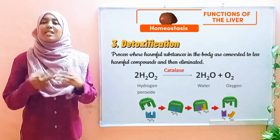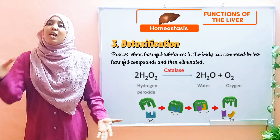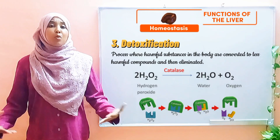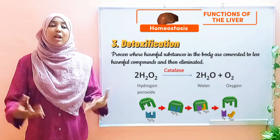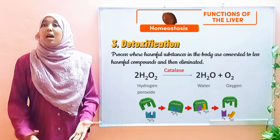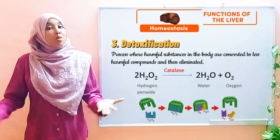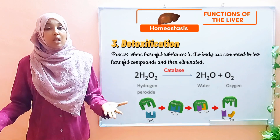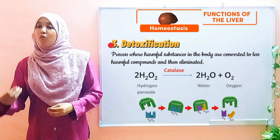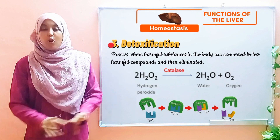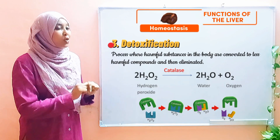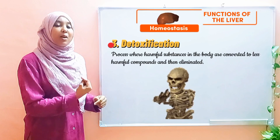Essentially, different chemical reactions in our body lead to the production of wastes, and most of these wastes are harmful. So they are converted to less harmful forms before elimination. And this is done by the liver.